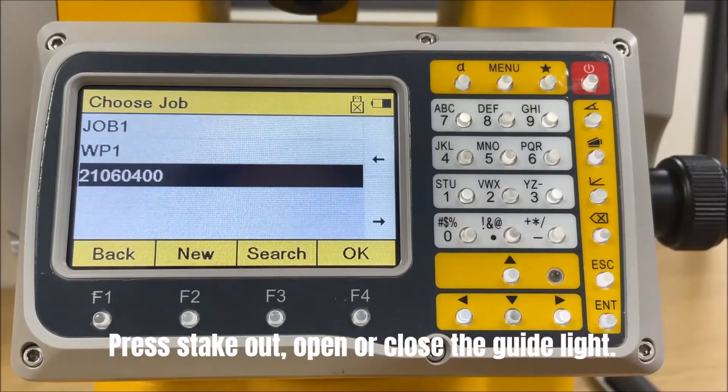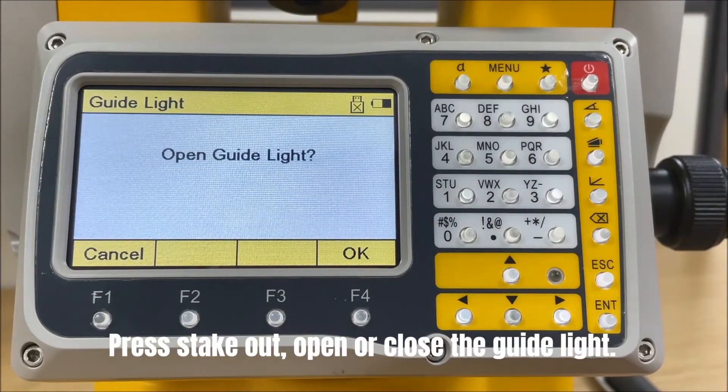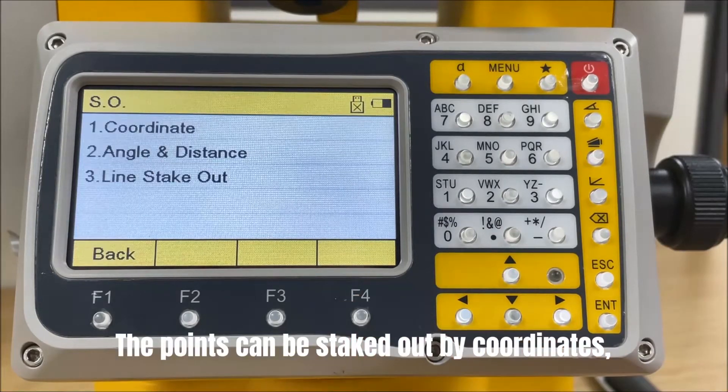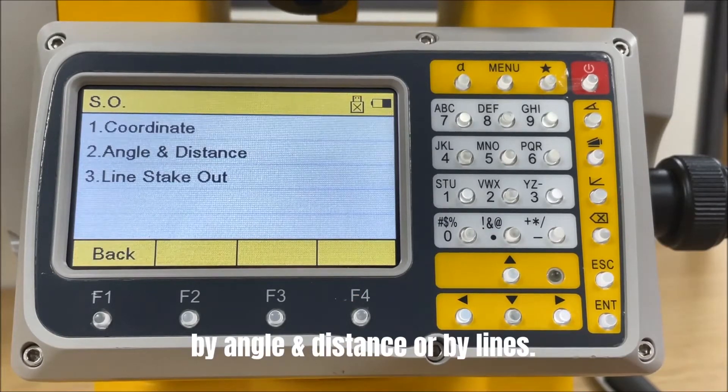Press stake out, open or close the guide light. The points can be staked out by coordinates, by angle and distance, or by lines.